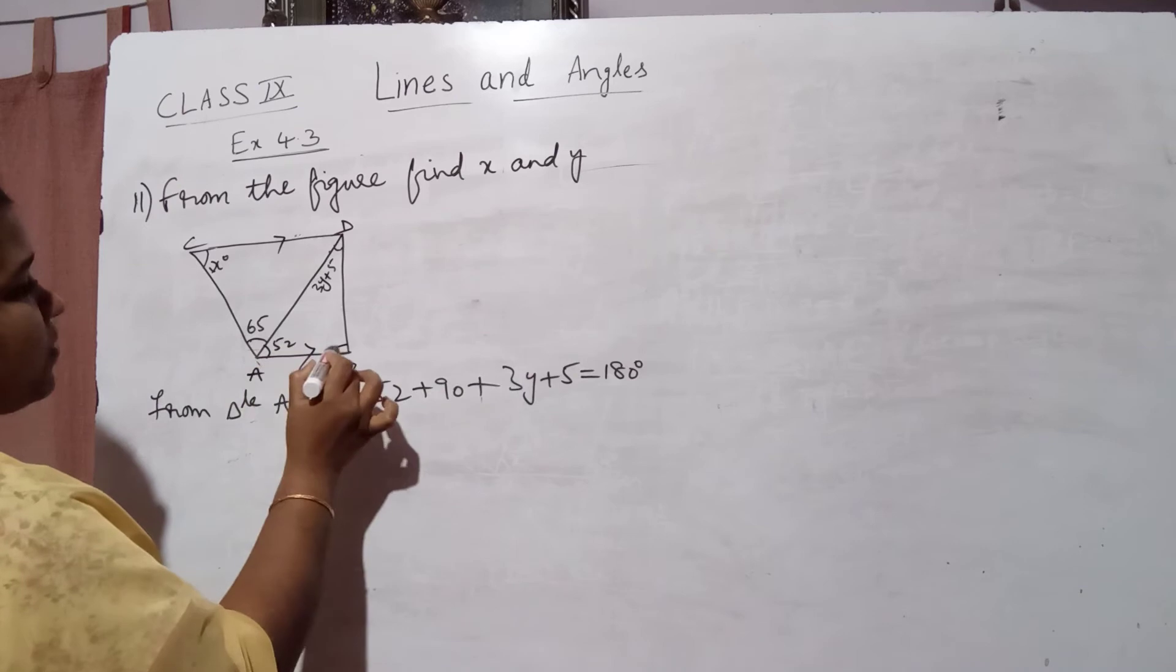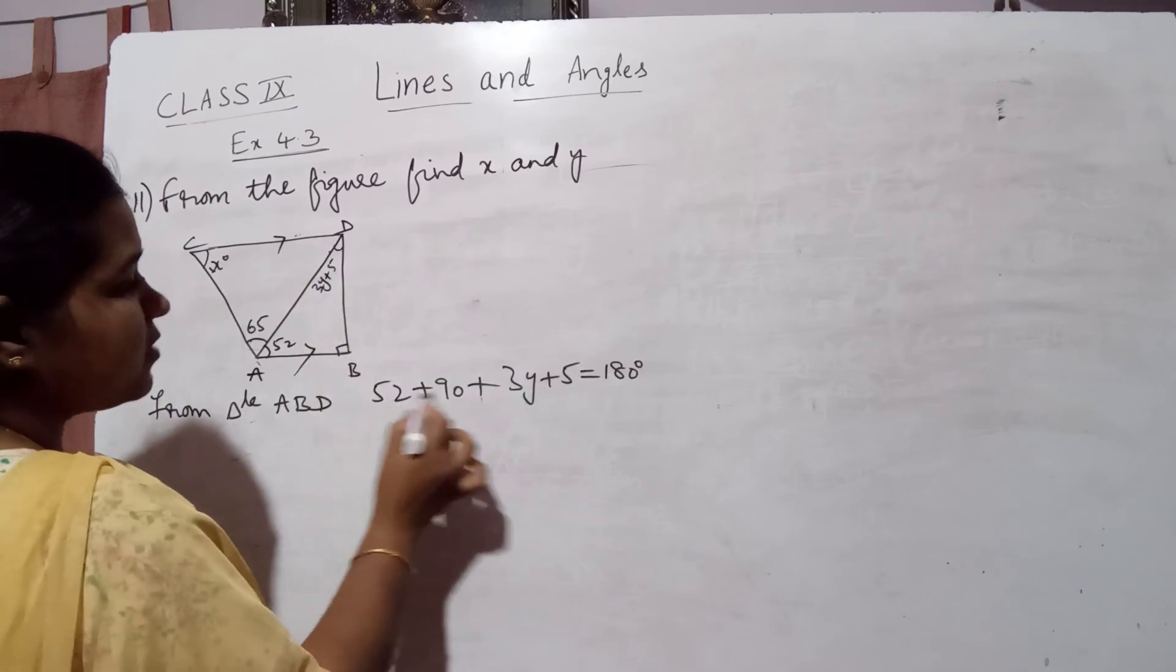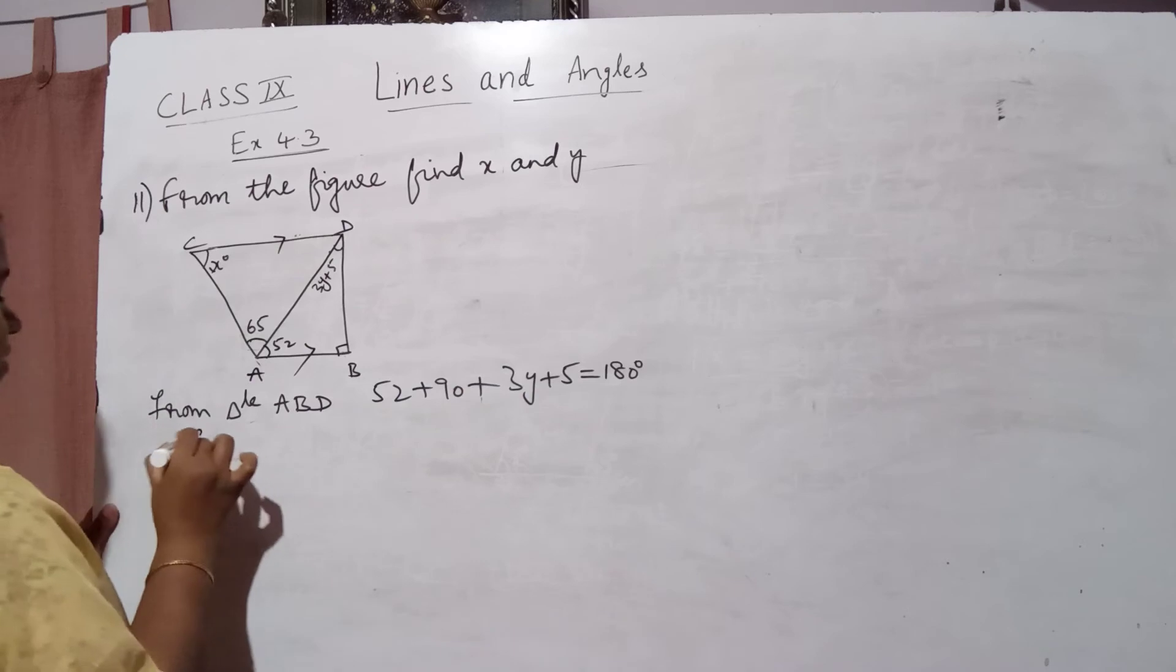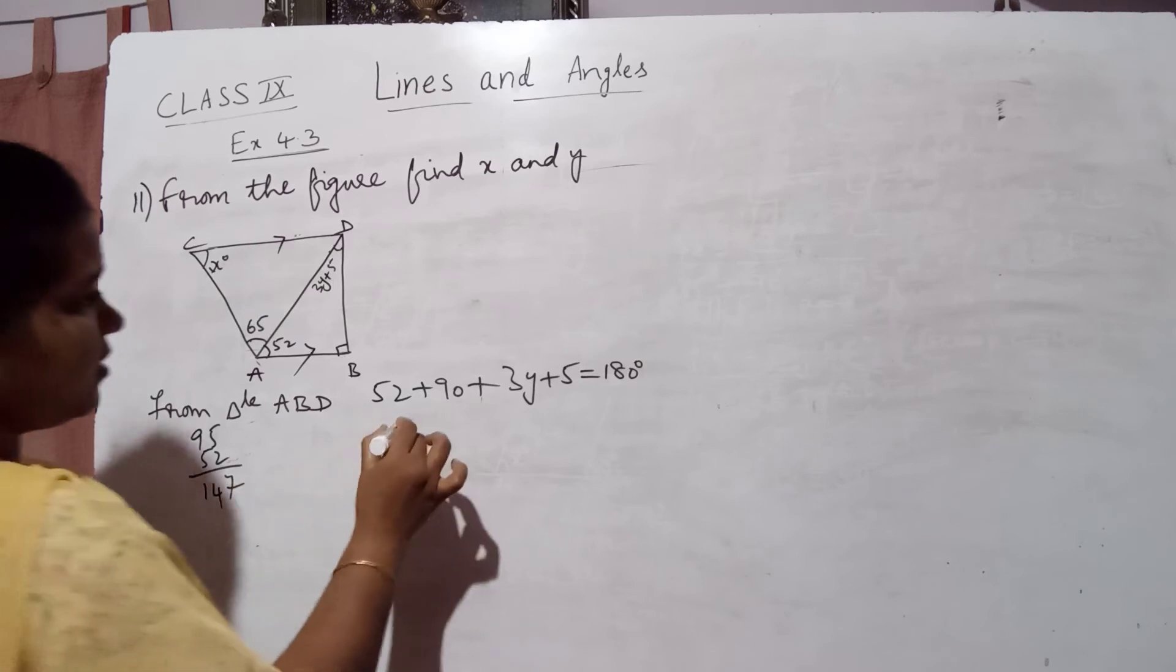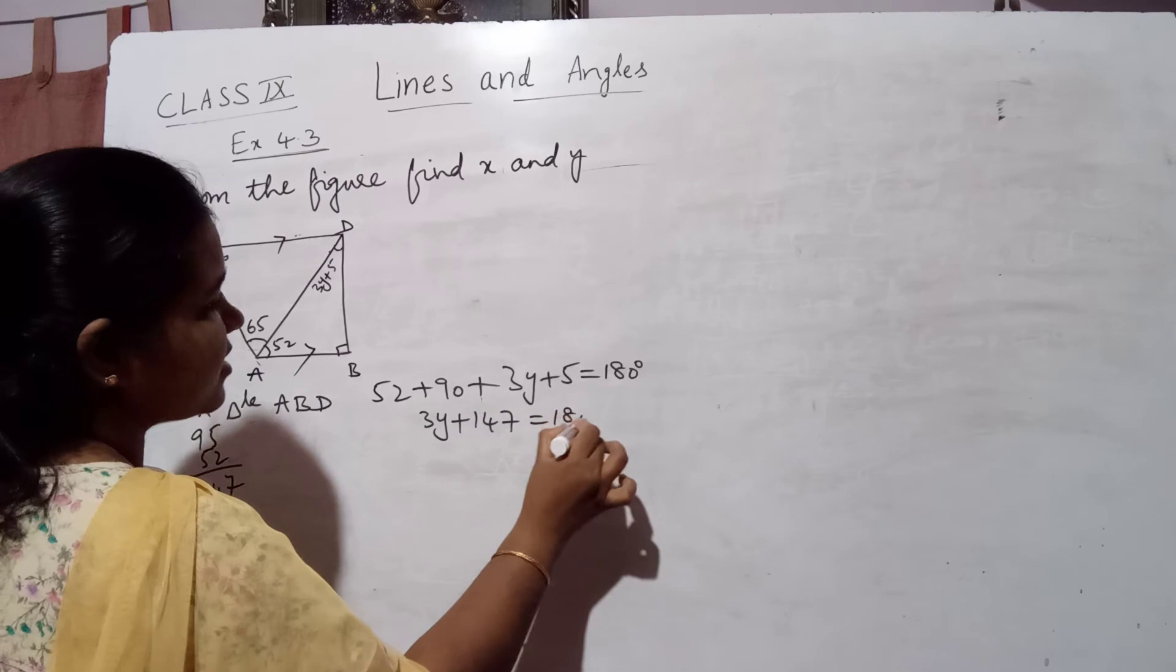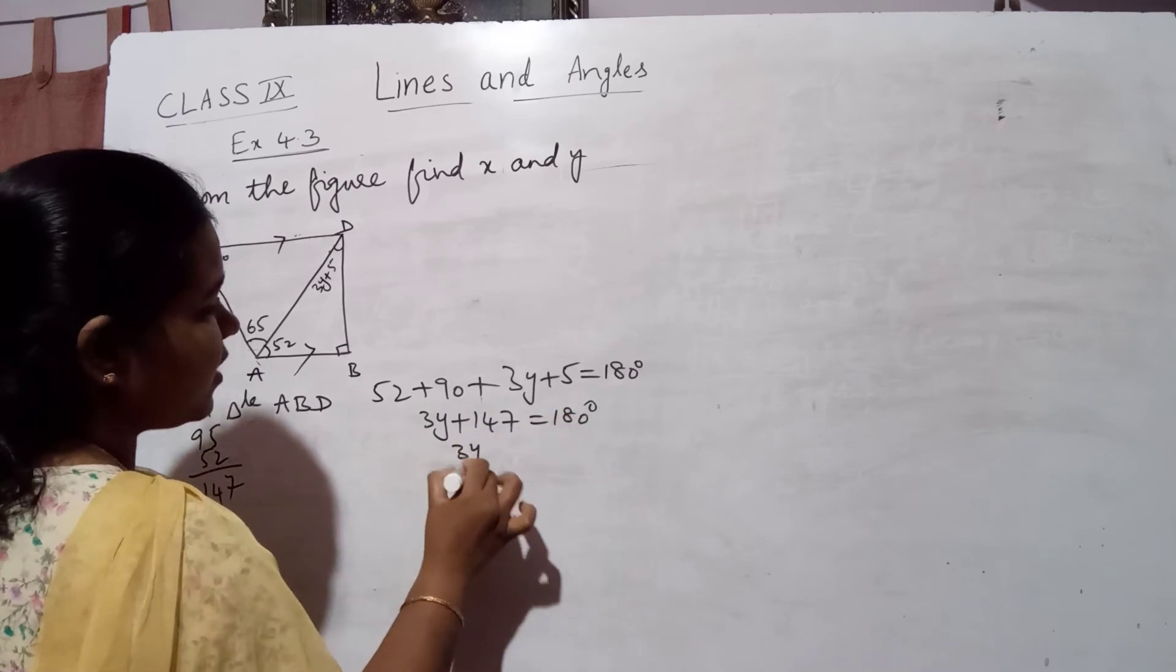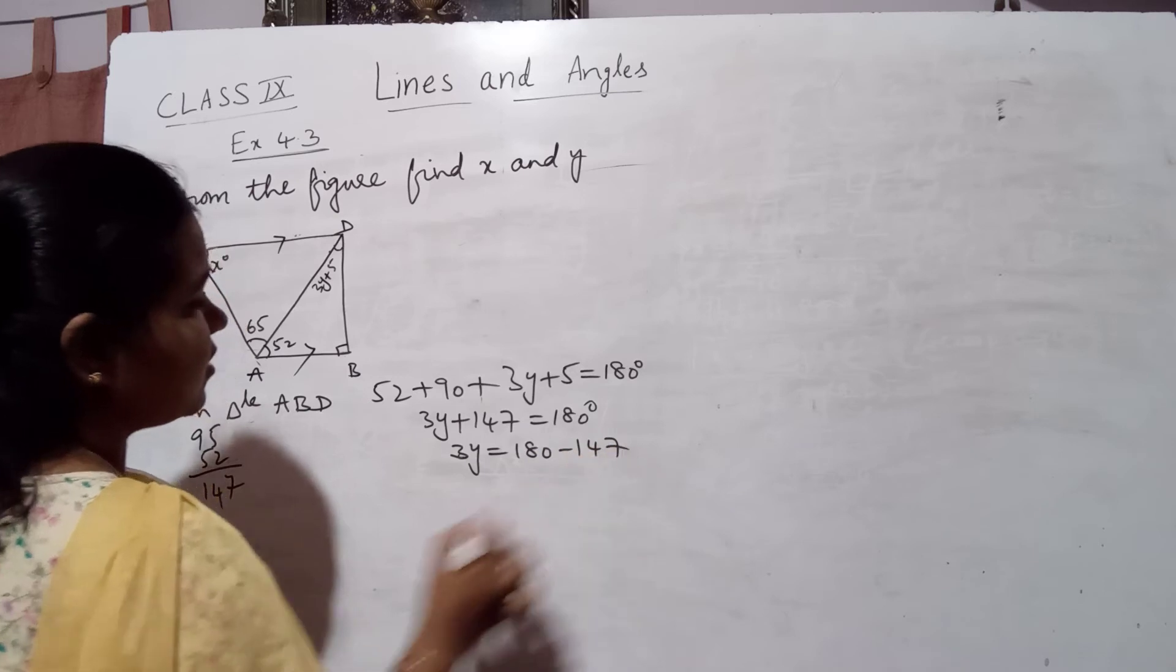52, this is 90, 3y plus 5 is 180. So 52 plus 95, 95 plus 52 is 147. So 3y plus 147 is equal to 180 degrees. So from this you can write 3y is equal to 180 minus 147.